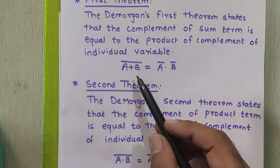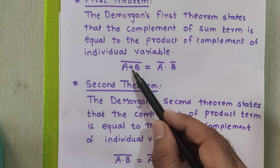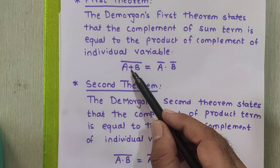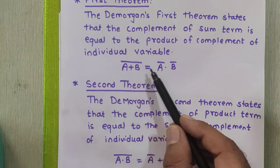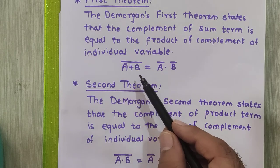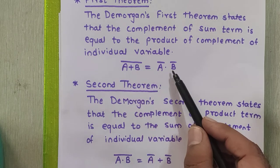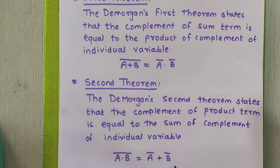If you see here, the sign is replaced from left-hand side to right-hand side in these theorems. The sum term becomes the product term, and the product term becomes the sum term.